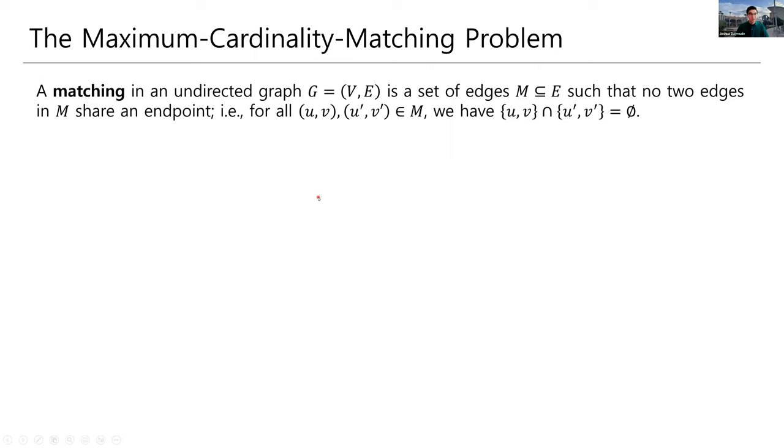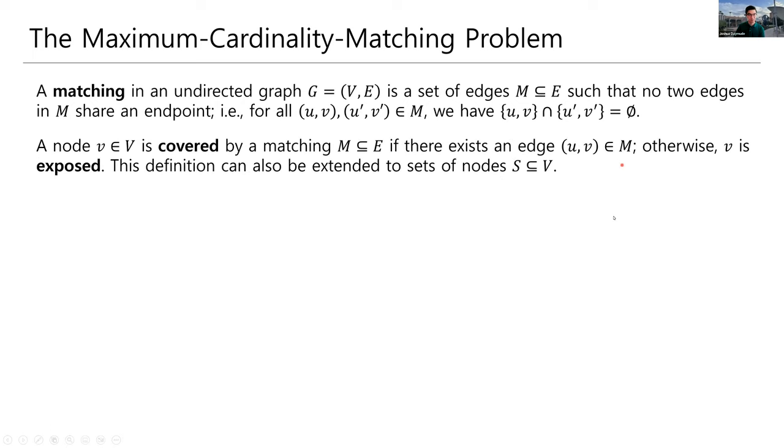You might recall from Unit 0 that a matching in an undirected graph is a set of edges such that no two edges at the matching share an endpoint. So formally written down, if we have a set of edges M that we claim is a matching, then any pair of edges I can choose from M better have the property that the endpoints of the first edge and the endpoints of the second edge are disjoint.